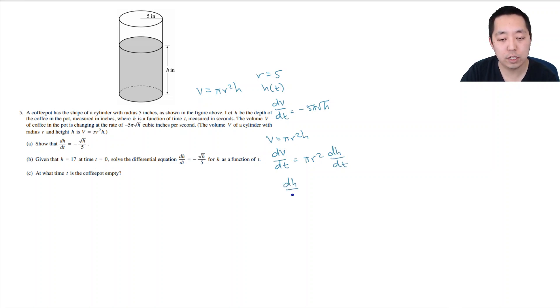So dh/dt is simply equal to dV/dt divided by πr². dV/dt, they told you, was -5π√h. And then πr², well r was 5, so this is 25π. That cancels with that become 5, that π cancels, so that's -√h/5. And that's what they want you to find.